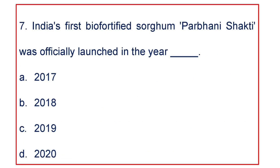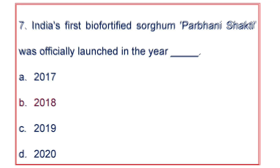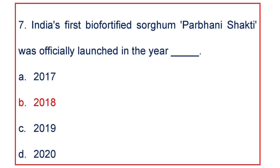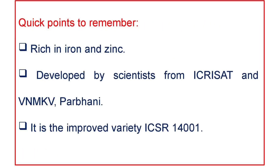Next important question: India's first biofortified sorghum, Parbani Shakti, was officially launched in the year: A. 2017, B. 2018, C. 2019, D. 2020. The answer is it was launched in 2018. Parbani Shakti is rich in Iron and Zinc. It is developed by scientists from ICRISAT and VNMKV Parbani. It is the improved variety from ICSR 14001.